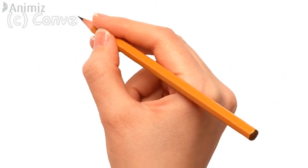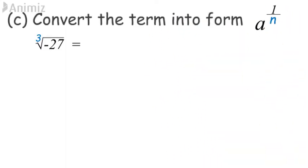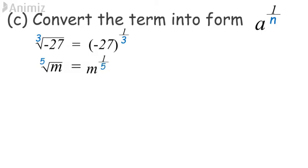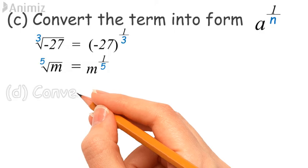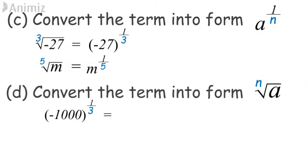Example C: convert the term into the form a^(1/n). The cube root of −27 equals (−27)^(1/3). The fifth root of m equals m^(1/5). Example D: convert the term into the form n-th root of a. (−1000)^(1/3) equals the cube root of −1000. n^(1/12) equals the 12th root of n.